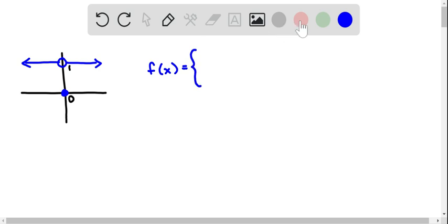So we write f of x equals, and then we have an open brace, and I'm seeing two pieces. I'm seeing the line at the top, and I'm also seeing the point at the bottom.